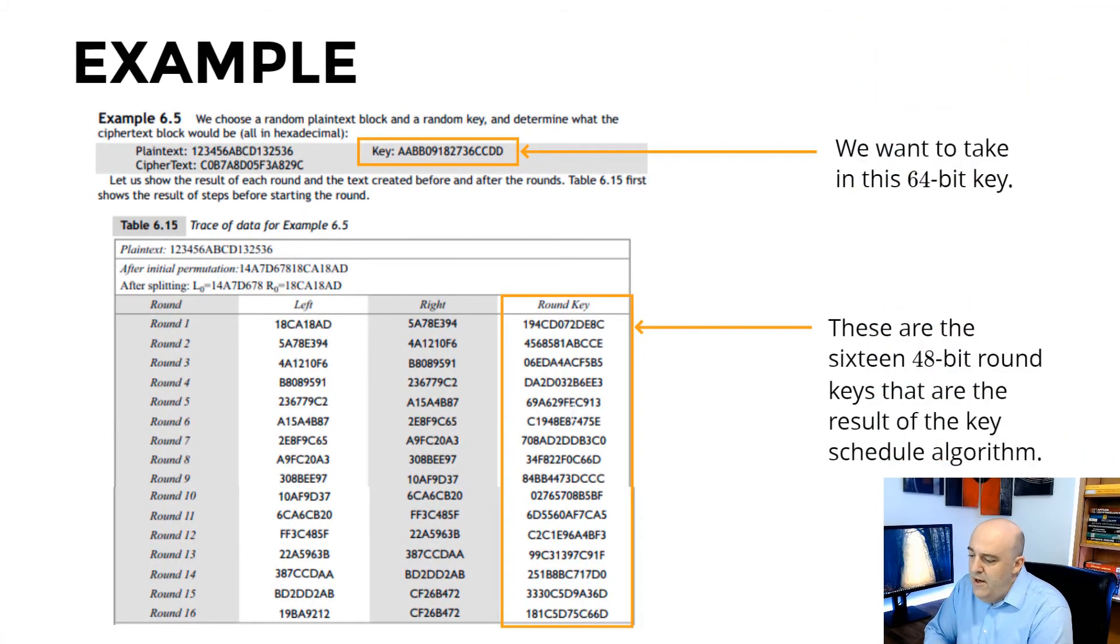So here's a little example from a textbook. We can just focus on the key part. We've taken a 64-bit key. It's highlighted here. And our goal is to write some code that produces these 16 48-bit round keys. So let's do that now from a blank file.